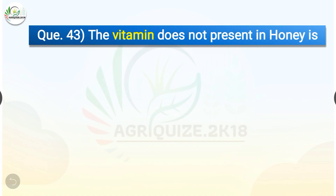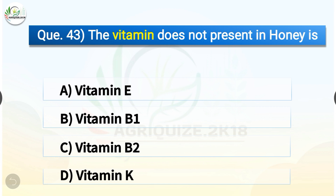Question number forty-three: Which vitamin is not present in honey? The options are: vitamin E, vitamin B1, vitamin B2, or vitamin K. The correct answer is option A — vitamin E. The vitamin which is not present in honey is vitamin E.